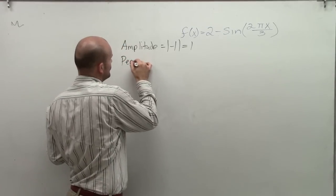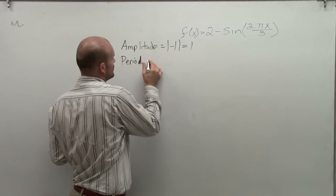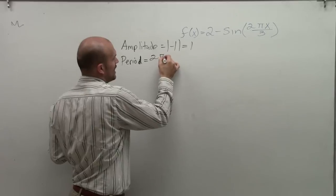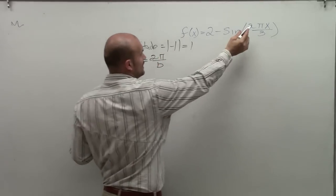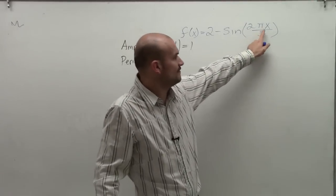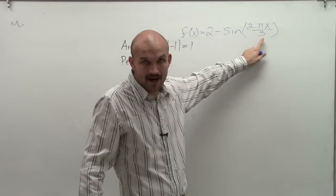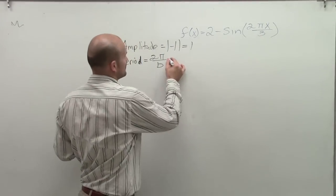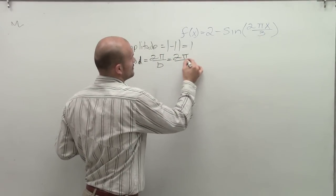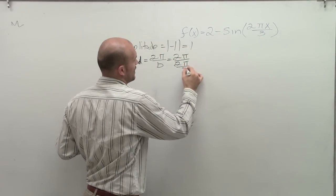The next thing I need to do is determine the period. So the period, remember, is 2 pi divided by b, where b is your coefficient of x. So I look at the coefficient of x, and the coefficient of x is 2 times pi, and that's being divided by 3. So I'm going to write 2 pi divided by 2 pi divided by 3.